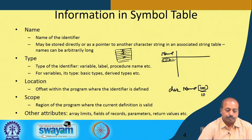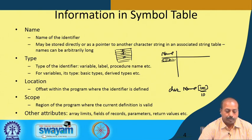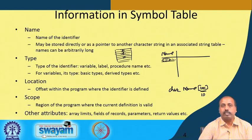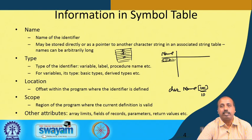The scope field indicates the region of the program where the current definition is valid — that is, which portion of the program can see that definition. There may also be other attributes like array limits, fields of records, parameters, and return values that need to be stored in the symbol table.